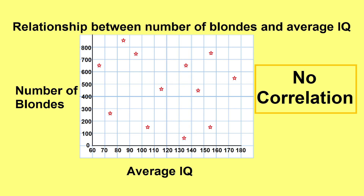Sometimes there is no recognizable relationship — for example, if we were plotting the number of blondes against the level of intelligence.